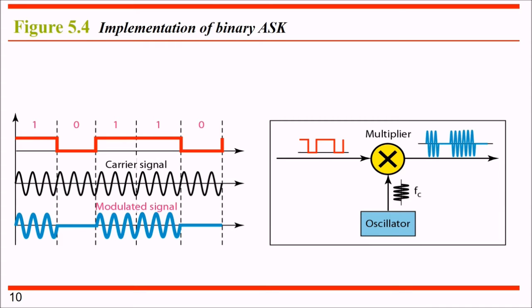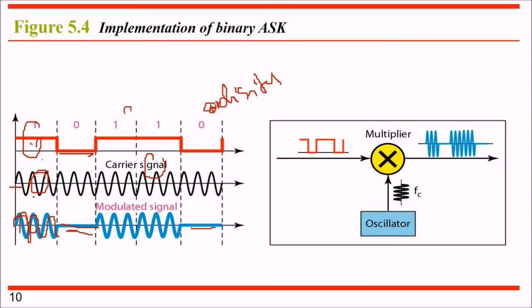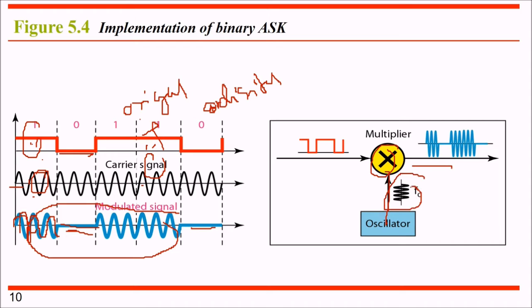To implement binary ASK, we have a carrier signal and a digital signal. Using a multiplier, we multiply these two signals together. For bit 0 there will be no signal output; otherwise there will be a signal. This combination gives binary ASK. The oscillator provides the carrier frequency FC, which is multiplied with the original digital signal, and the resulting waveform represents the transmitted ASK signal.